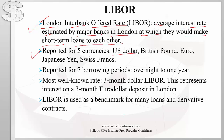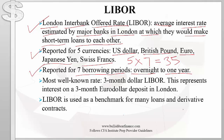LIBOR is reported on five currencies: the US dollar, British pound, euro, Japanese yen, and Swiss francs. Further, LIBOR is reported for seven borrowing periods ranging from overnight to one year. So LIBOR actually refers to 35 different rates — five currencies times seven borrowing periods — and these 35 different LIBOR rates are reported each business day.